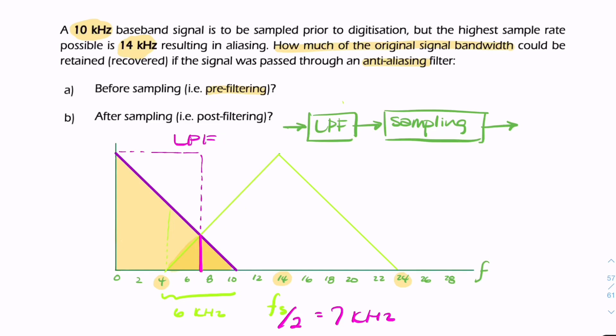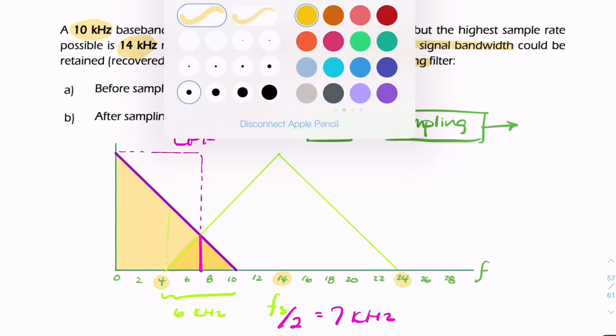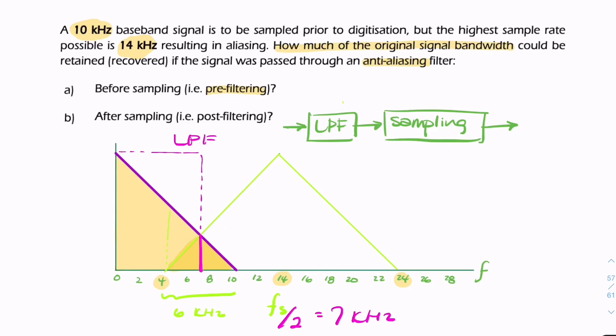then we would effectively be able to salvage the frequency range from 0 to 7 kHz. We would still have 0 to 4 kHz, but additionally 4 to 7 kHz, so we would keep 7 kHz total.